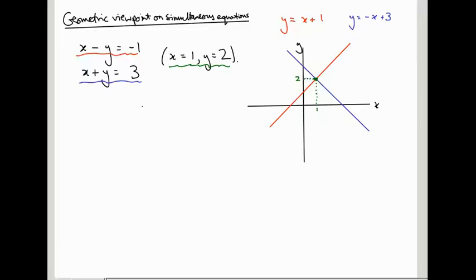What does it mean to solve the equations? It means to find all the points that satisfy both pairs of equations. So all the points that lie on the red line and all the points that lie on the blue line. Simultaneously. And the only point that lies simultaneously on the red line and the blue line is this intersection point. So solving equations is the same as intersecting lines in this case.